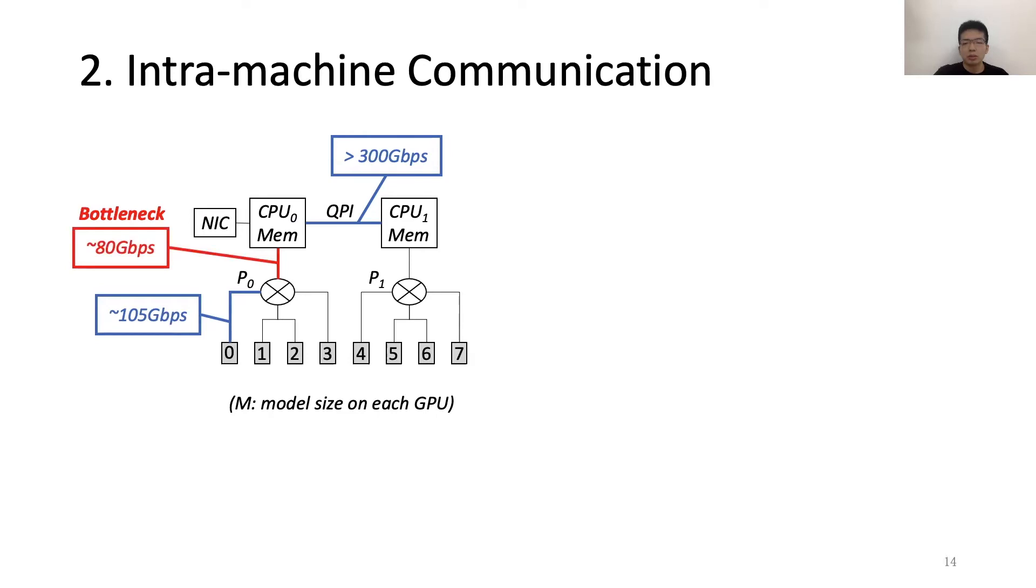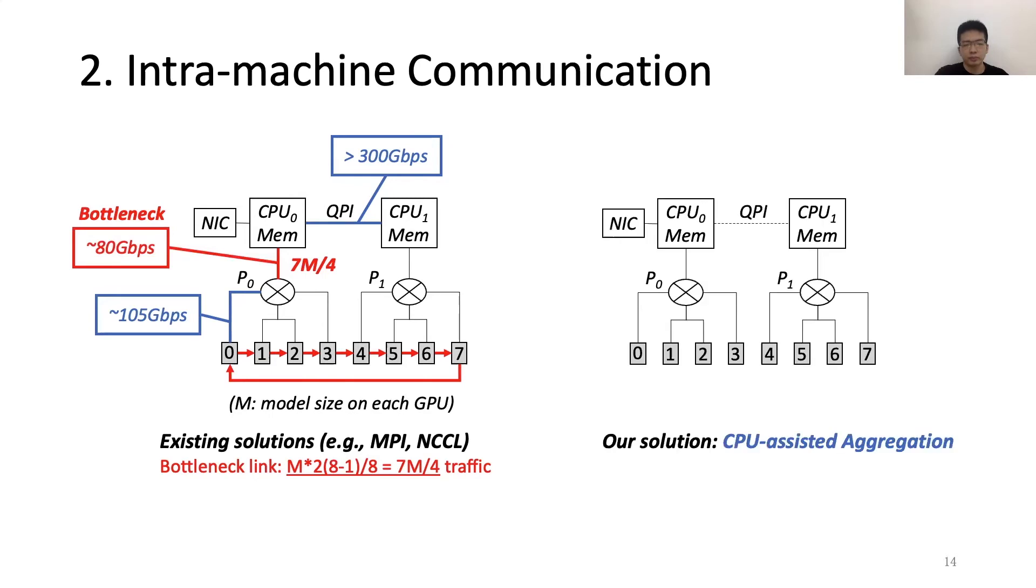Our goal is to minimize the traffic on this link. However, current solutions such as MPI or NCCL choose to perform all-reduce for all these 8 GPUs directly. The traffic on the bottleneck link will be 7m divided by 4 according to all-reduce algorithm, where m represents the model size on each GPU. This traffic volume is too large for this link.